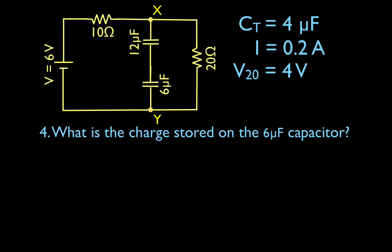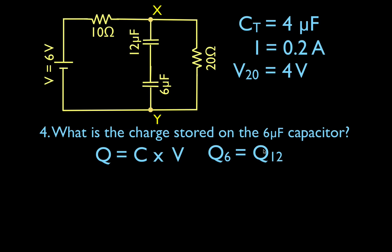What is the charge stored on the 6 microfarad capacitor? We have two capacitors in series. You need to remember that for capacitors in series, the total charge and the charge on each capacitor is the same. So the charge on this capacitor and the charge on this capacitor are going to be the same, and they're going to equal the total charge. We're going to use Q equals C times V.